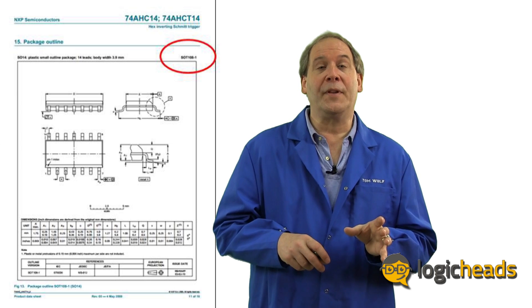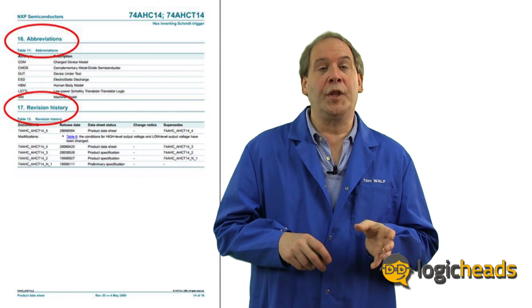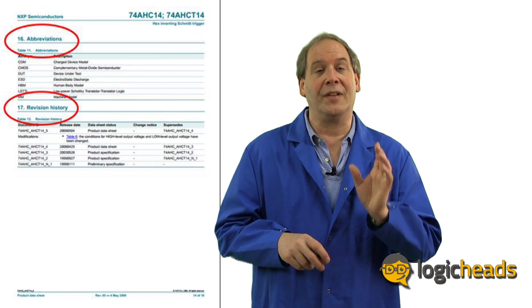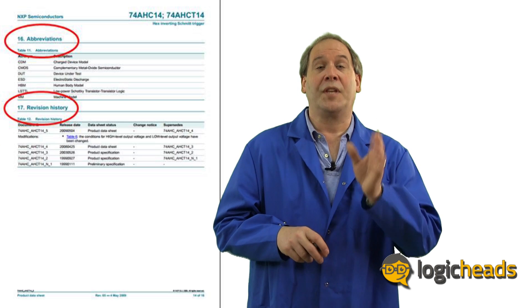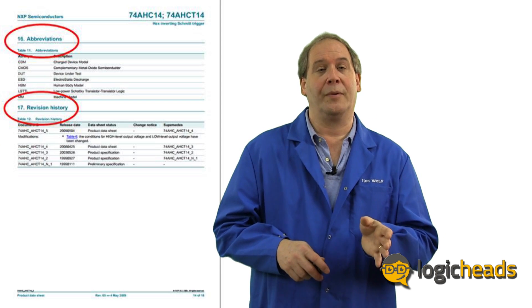And finally, wrapping up the datasheet is a listing of all of the revisions of the device, as well as a list of all the abbreviations used. Save yourself some trouble, always use the latest revision. So there you have it, a quick visit of a logic datasheet. Most of your answers are there, you just need to know where to look for them. But remember, if you still can't find your answer, don't hesitate to call your local FAE. Now, go out and design something.